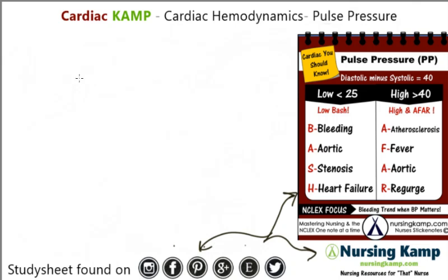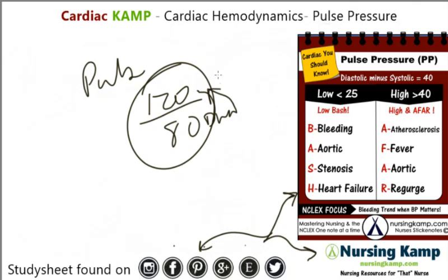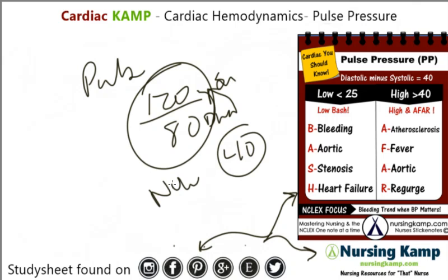Okay, pulse pressure — why do we measure it? A normal blood pressure is 120 over 80. If you subtract the diastolic from the systolic, you get 40, and that's a normal pulse pressure.